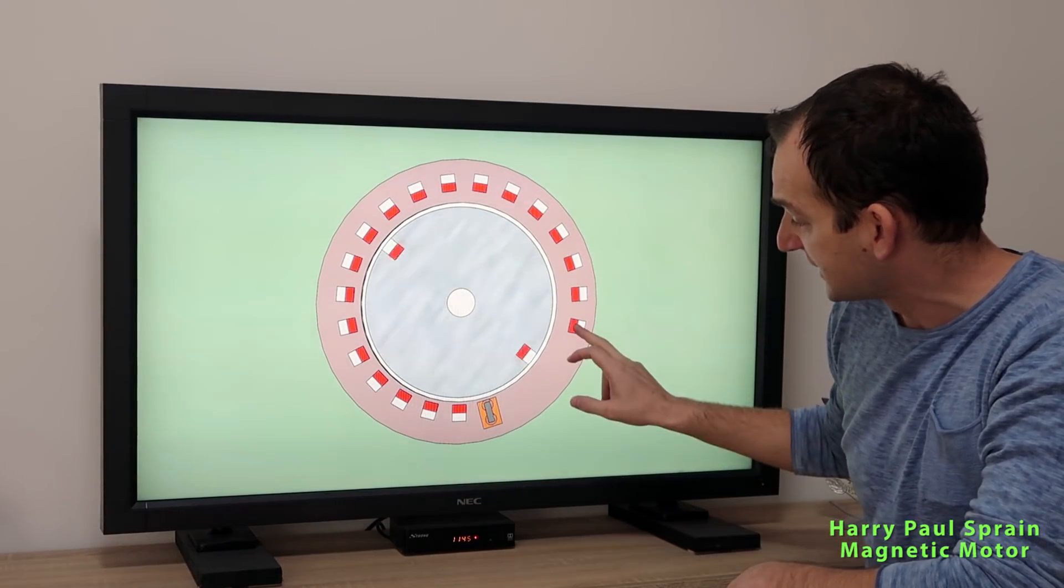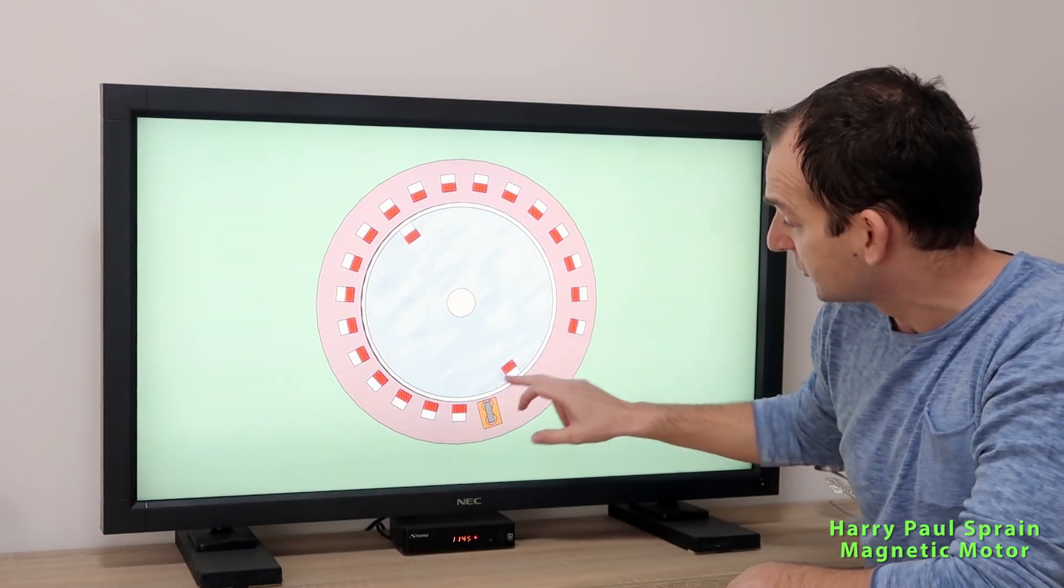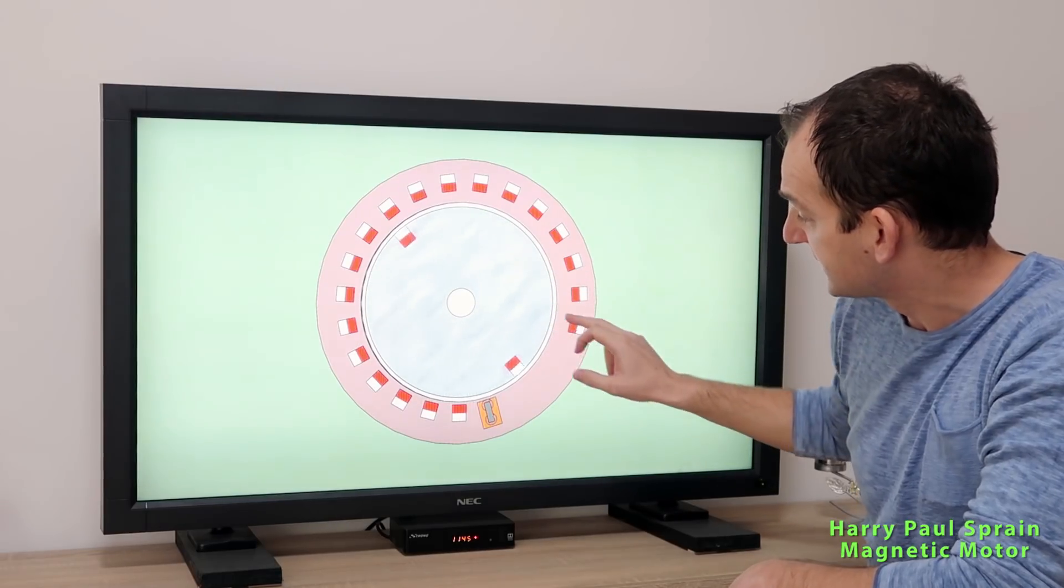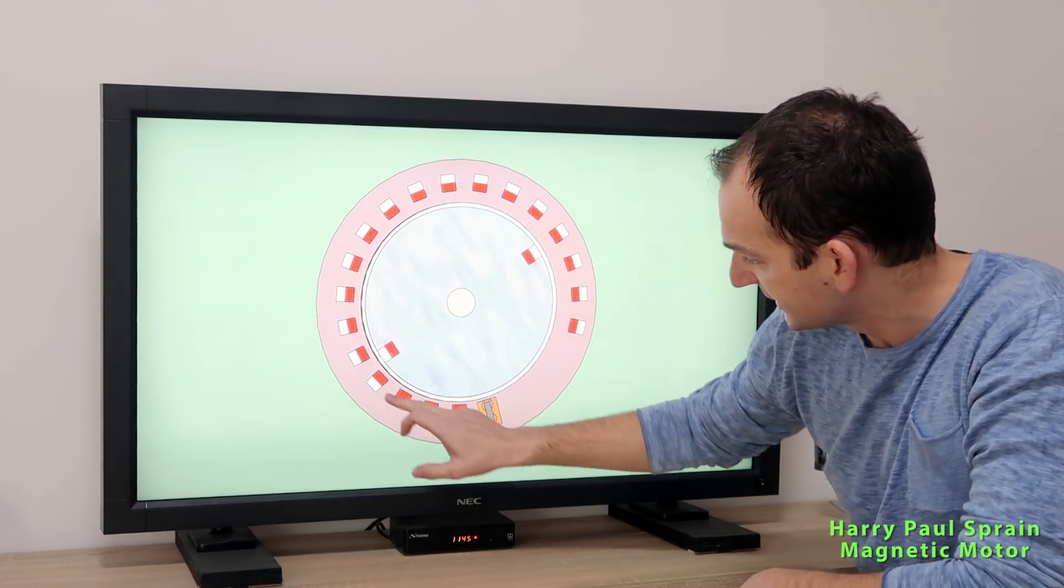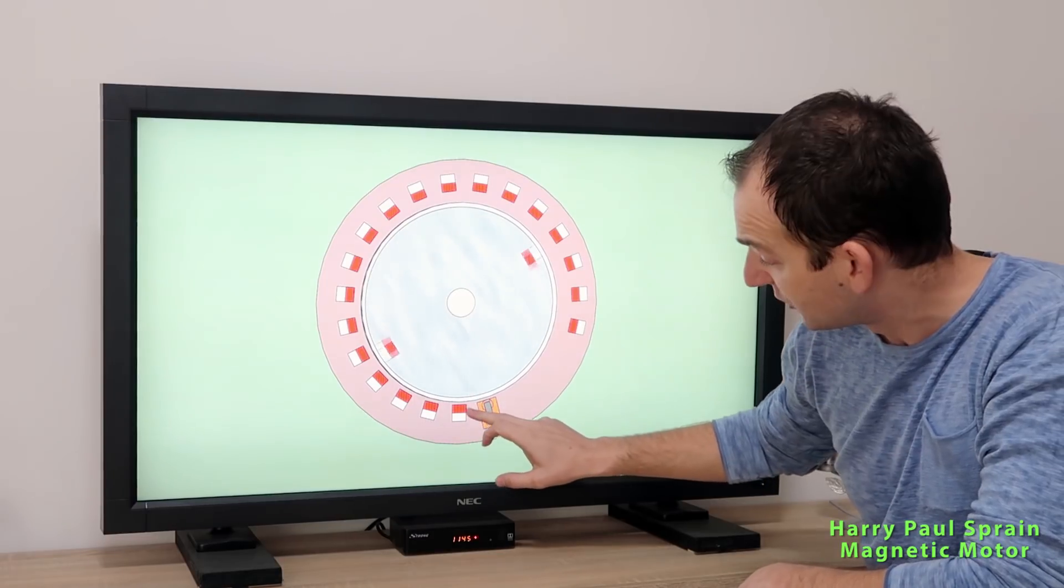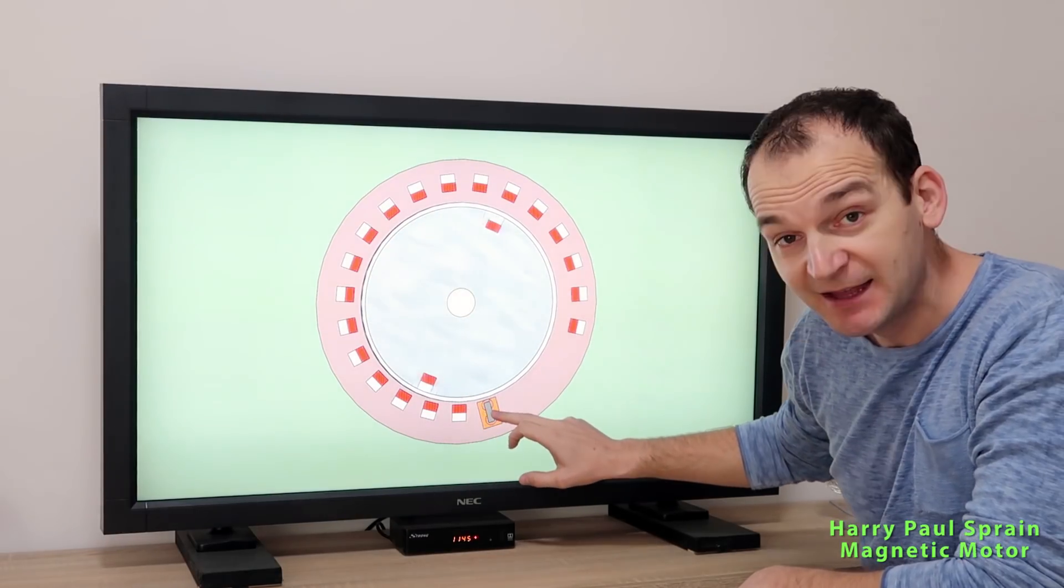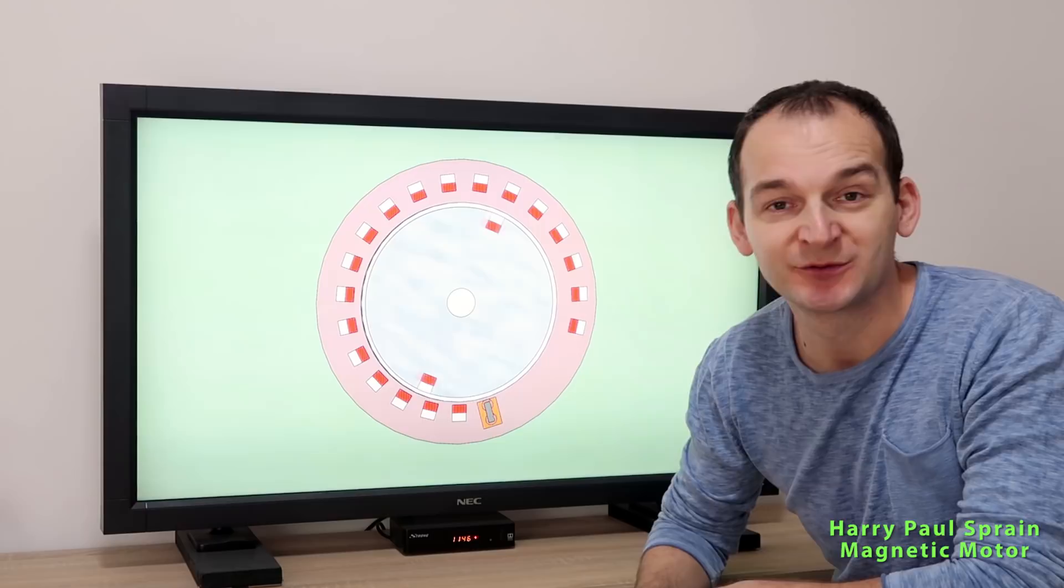So basically as the rotor starts and spins, the stator will more and more attract the rotor toward itself to the last magnet over here. And the end magnet is really important.